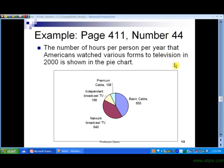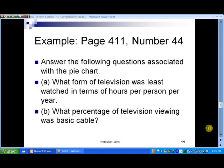In slide number 13, let's go ahead and take a look at an example of these pie charts. It says the number of hours per person per year that Americans watched various forms of television in 2000 is shown in the chart. This is the way people watch TV: mostly basic cable TV, a lot of people watch cable, and then right after that the broadcast TV, you know, ABC, CBS, NBC, and then independent stations like Fox and that kind of thing. And then premium cable like HBO is in the last category. So here's our graph, let's take a look at the questions now.